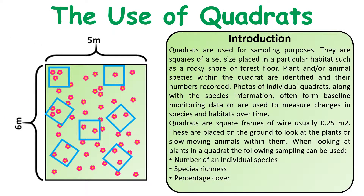Quadrats are a simple way of measuring the species or the number of species in a certain area. Each quadrat is a certain size — usually they might be half a meter squared or a quarter of a meter squared — and you go and put them down randomly in an area. Once you've put them down randomly, you count the number of a particular organism that you were looking at within that area.